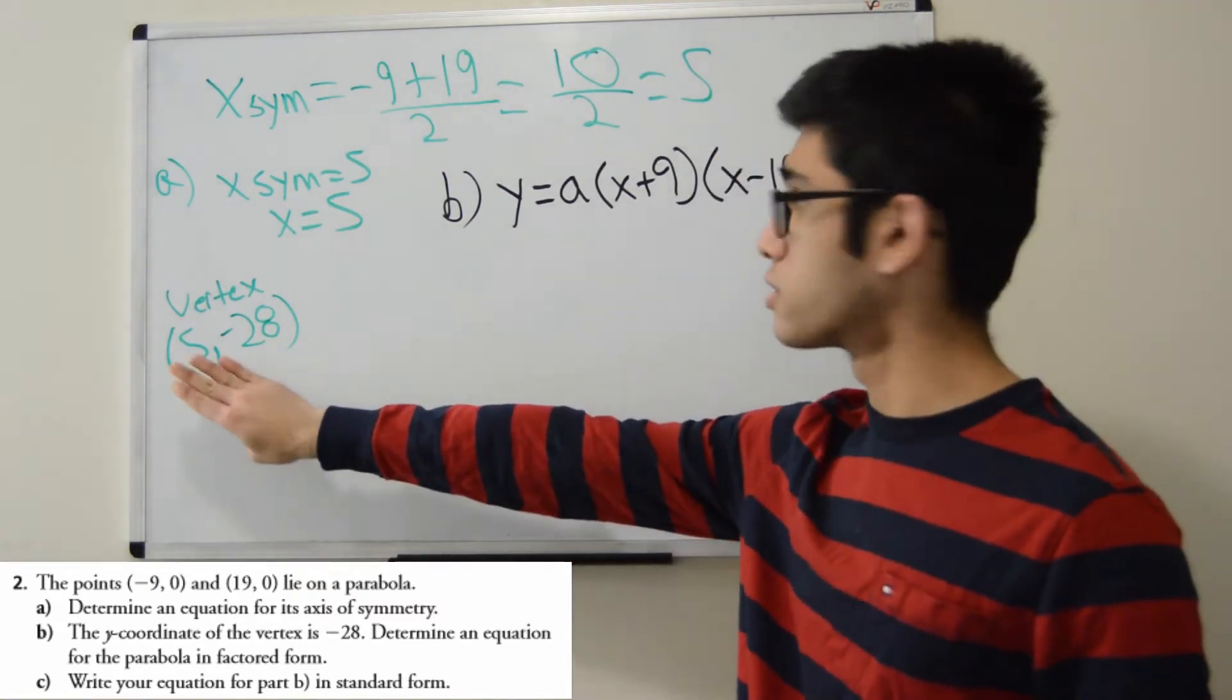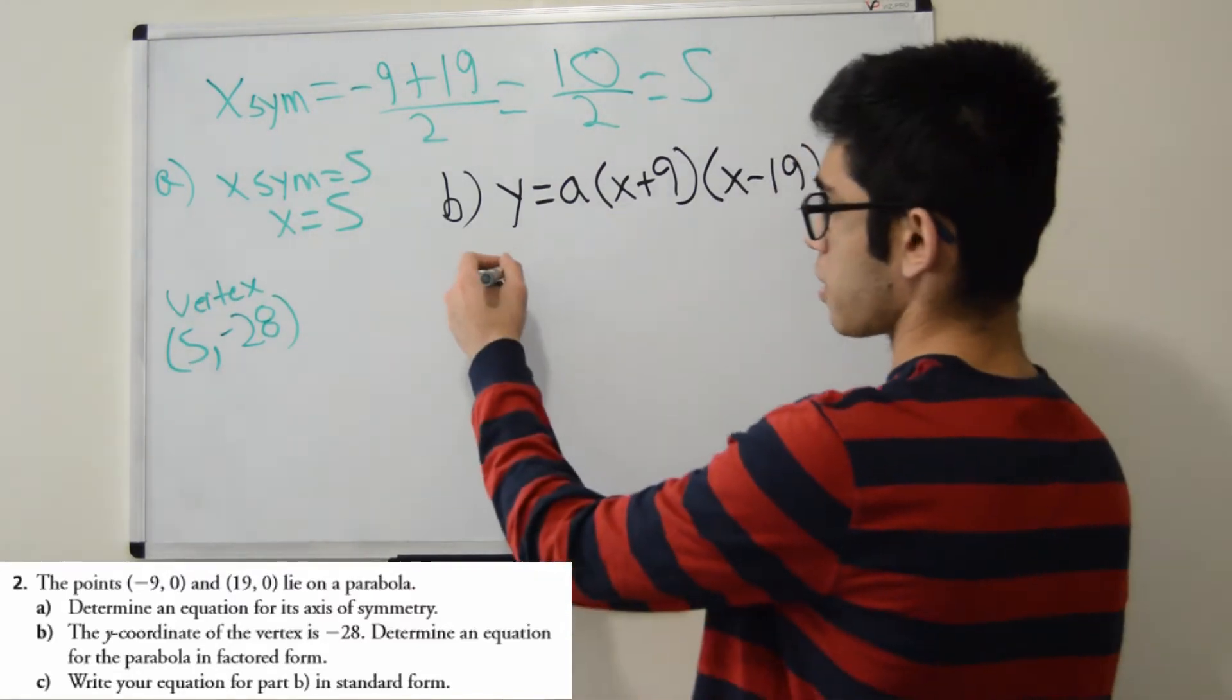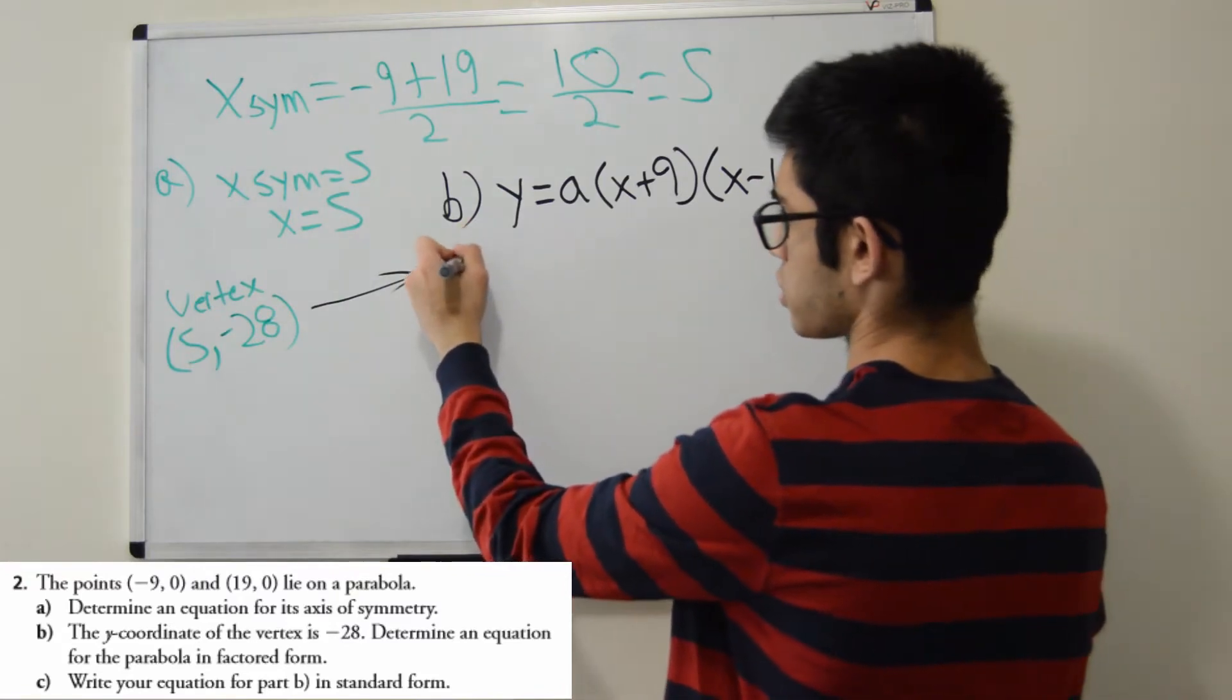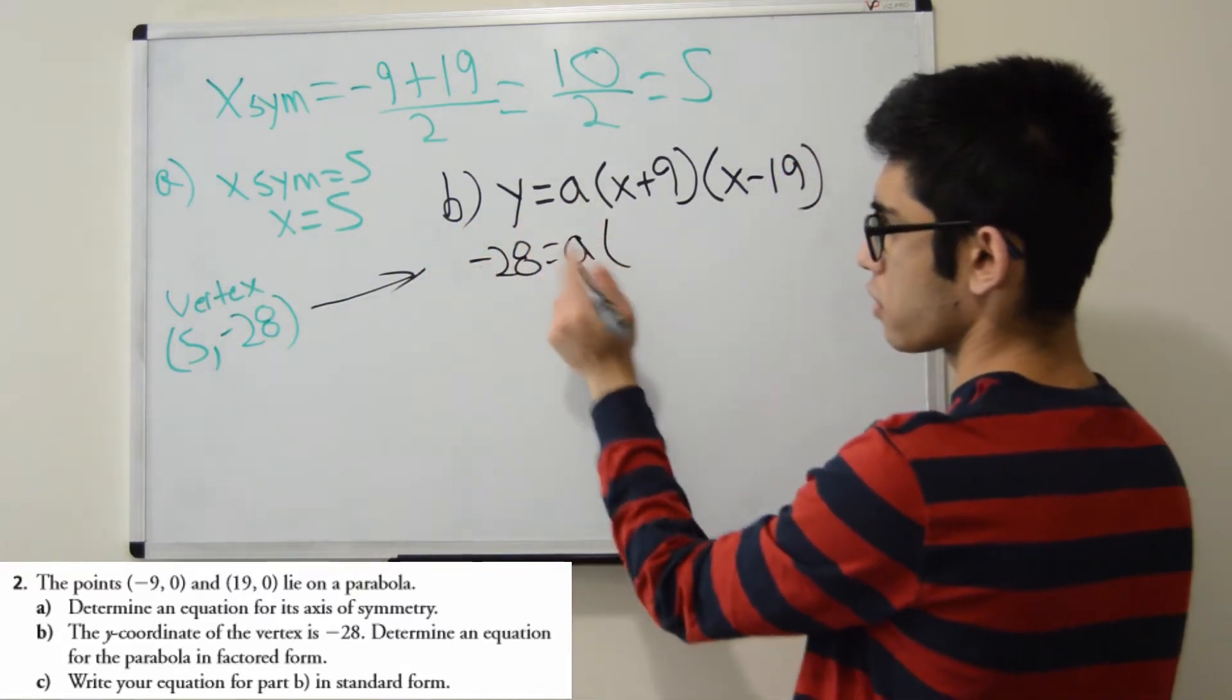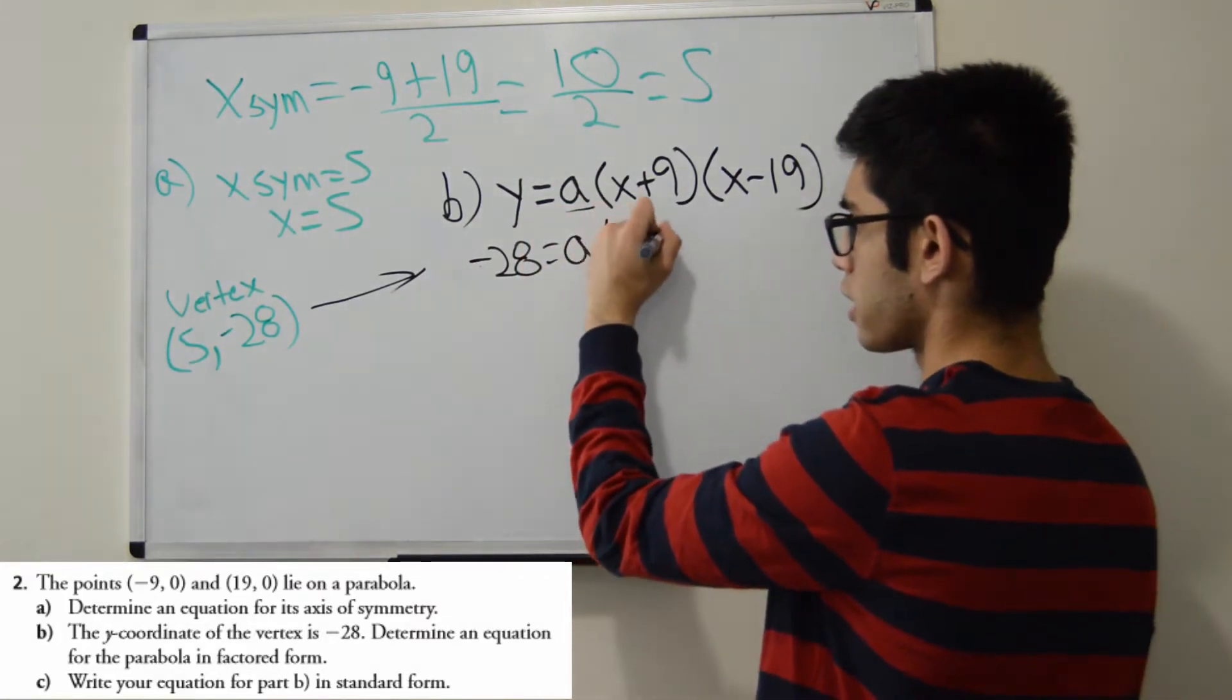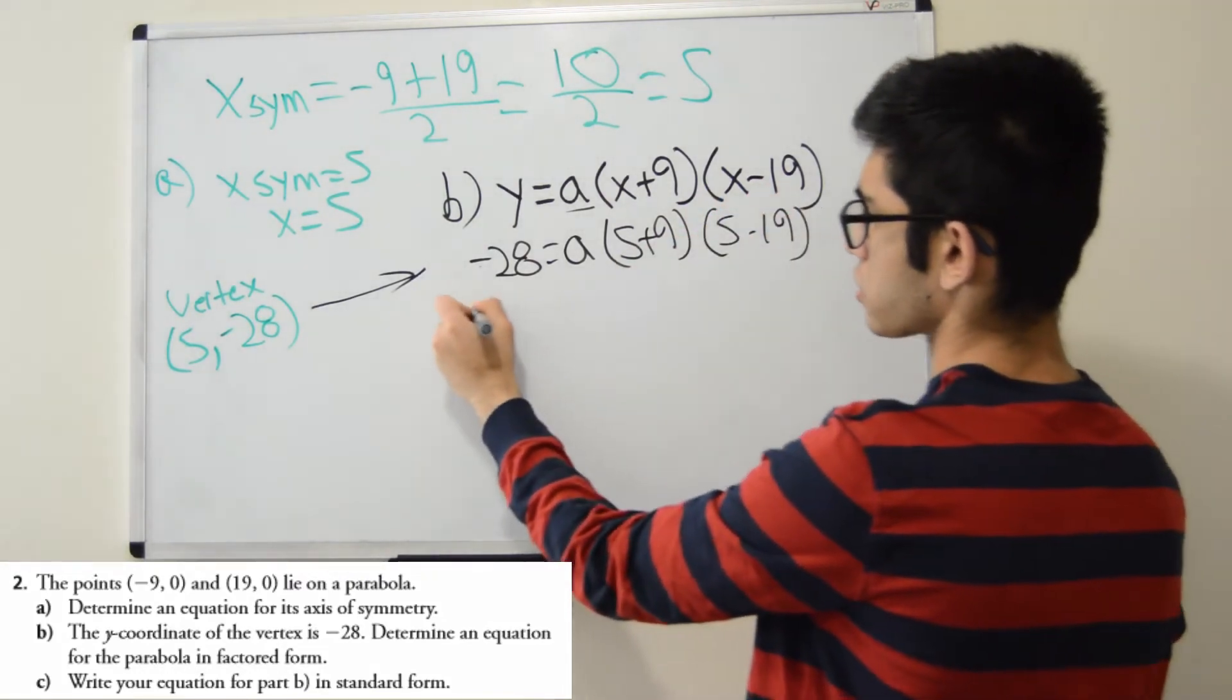So let's plug that point in. So I'm subbing in my vertex. So what's my y value? -28. So a is what I'm solving for. So what's my x? 5 + 9. What's my x here? 5 - 19. So let's go ahead and solve.